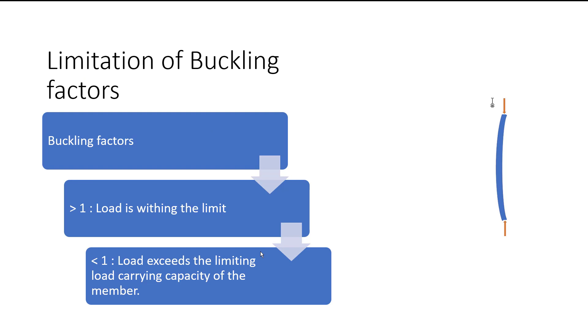Now let's discuss about the factors, the limitation of the buckling factors and how we can use it. If it is greater than one, it means load is within the limit - that means the member has the capability to take care of the load. If 10 kilonewtons and your factor is one, it's fine.